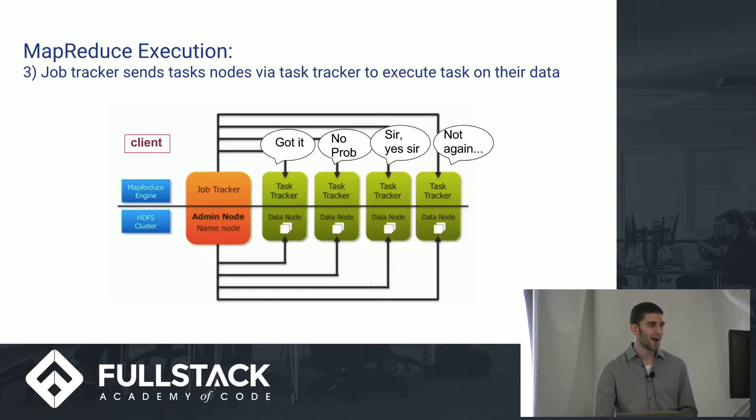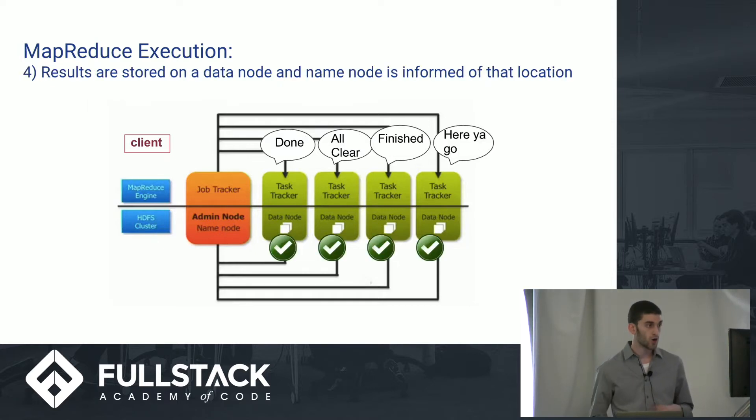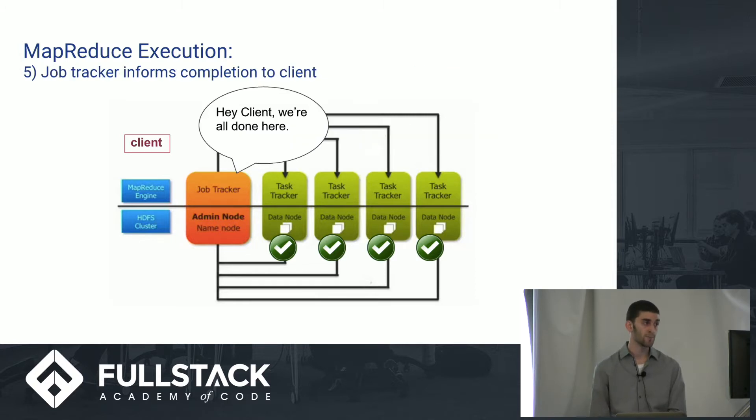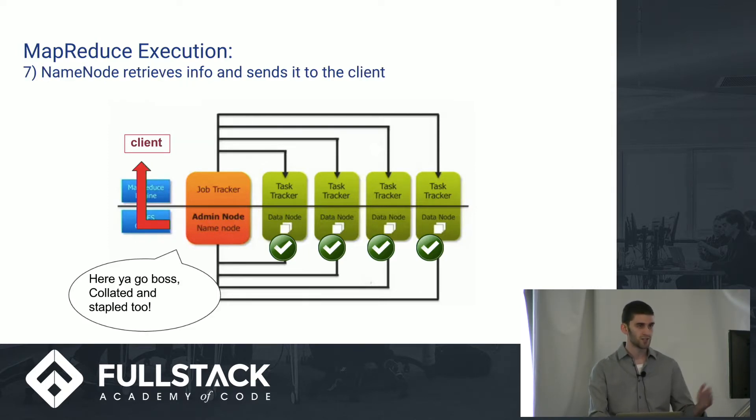And at this point, they start computing in parallel what's going on. And eventually, they'll all be done. And they'll let the job tracker know that, hey, we finished this information. And they're going to store the data that they finished on the data node. At that point, the job tracker tells the client, all right, everything's done. The client's going to ask the name node for the information. And the name node will make it look nice and pretty and send it back to the client. And that's pretty much how that all works.